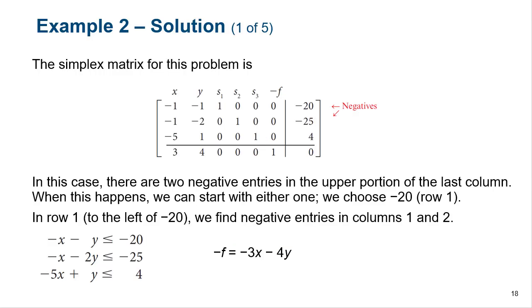Here is the simplex matrix we get once we add in our slack variables. We've got negative 1, negative 1, negative 20; negative 1, negative 2, negative 25; negative 5, 1, and 4. We have positive numbers in the objective function row because we moved everything over to the F side to set it equal to zero. You'll notice that we're now solving for negative F. Because in this case we have two negative entries in the augment column, we have a choice and can start with either one.